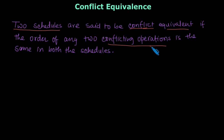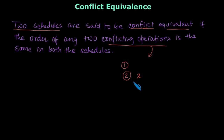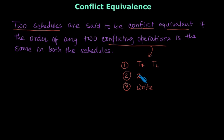We already know what conflicting operations are. Two operations are conflicting if: first, they belong to two different transactions; second, they are acting over the same database item or variable; and third, at least one of the operations is a write operation.